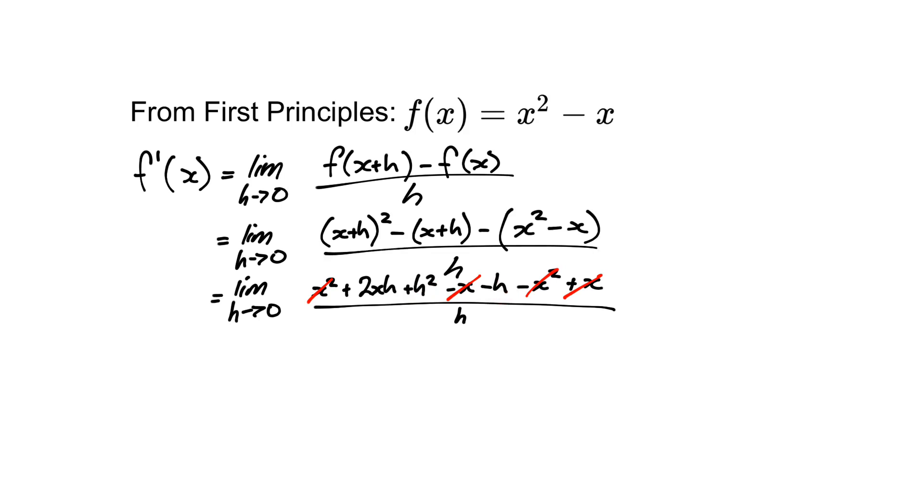So if we get rid of this h, we can get rid of that one, change that to a 1 and change that to a 1. Rewriting this gives us the limit as h tends towards 0 of 2x plus h minus 1.